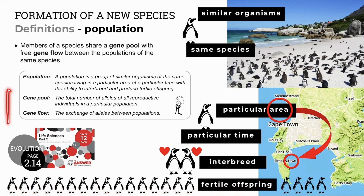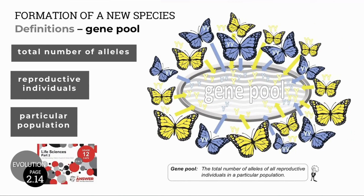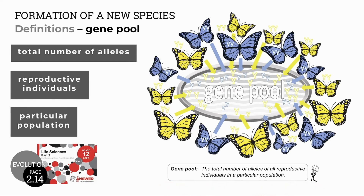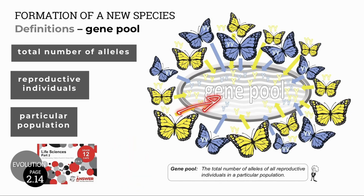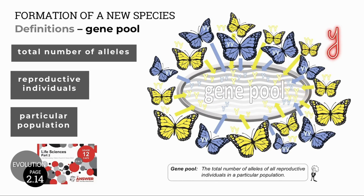Gene pool and gene flow are another two definitions connected to populations. A gene pool is the total number of alleles of all reproductive individuals in a particular population. For example, a yellow butterfly may contribute its alleles — big Y, big Y, or if heterozygous, big Y, small Y — into the gene pool. A blue butterfly, on the other hand, will contribute small Y, small Y into the same gene pool.